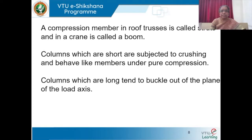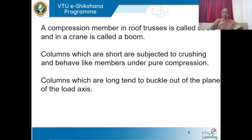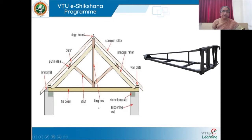There are two types of columns: short and long. A short column is subjected to crushing and behaves like a member under pure compression. Columns which are long will bend and buckle out of the plane of the load axis. The discontinuous strut and the lengthy diagonal member can be called a continuous strut. The boom is used to lift trusses and is subjected to compressive force.